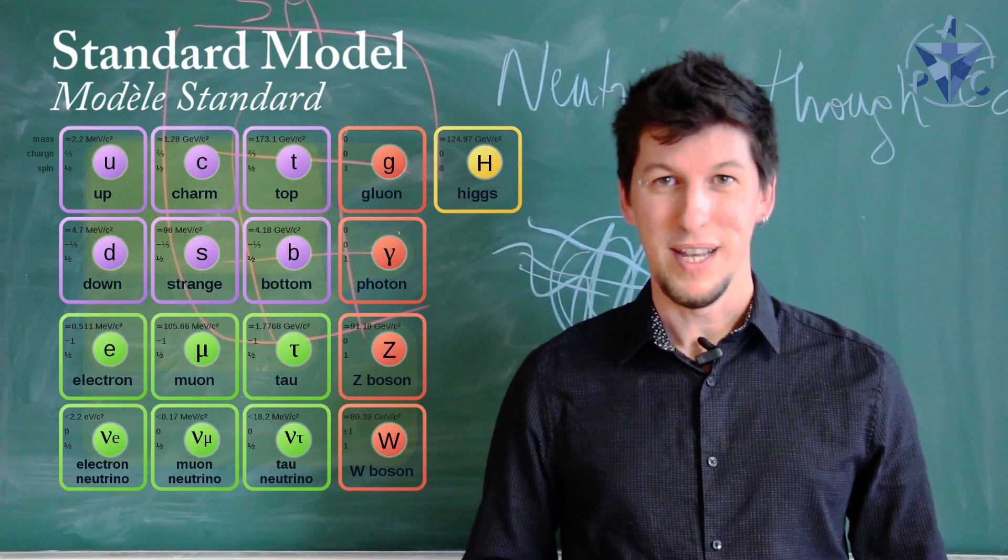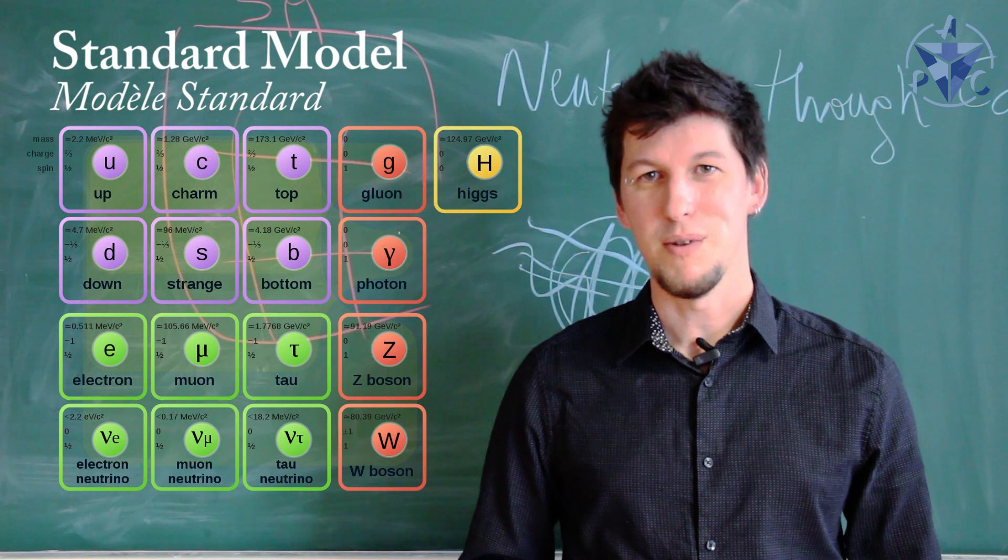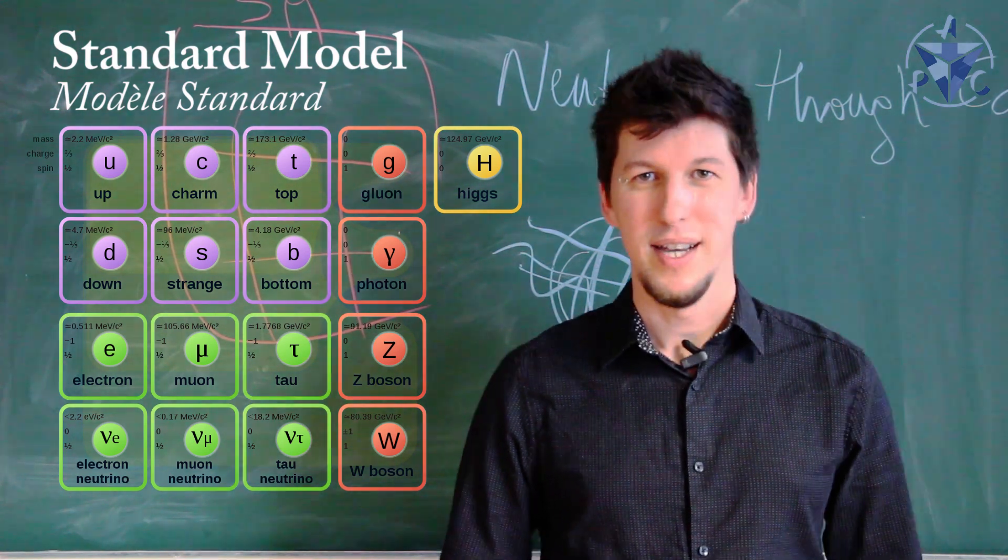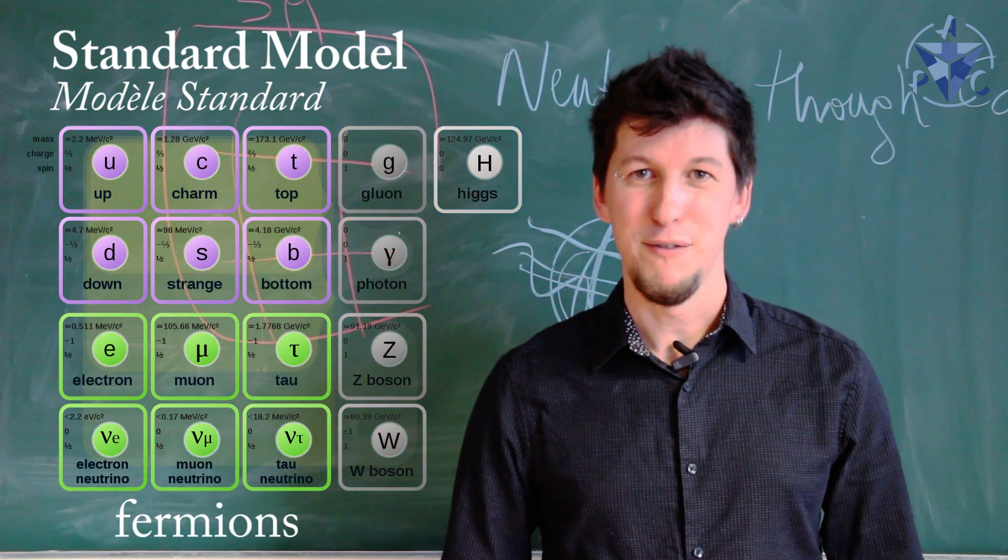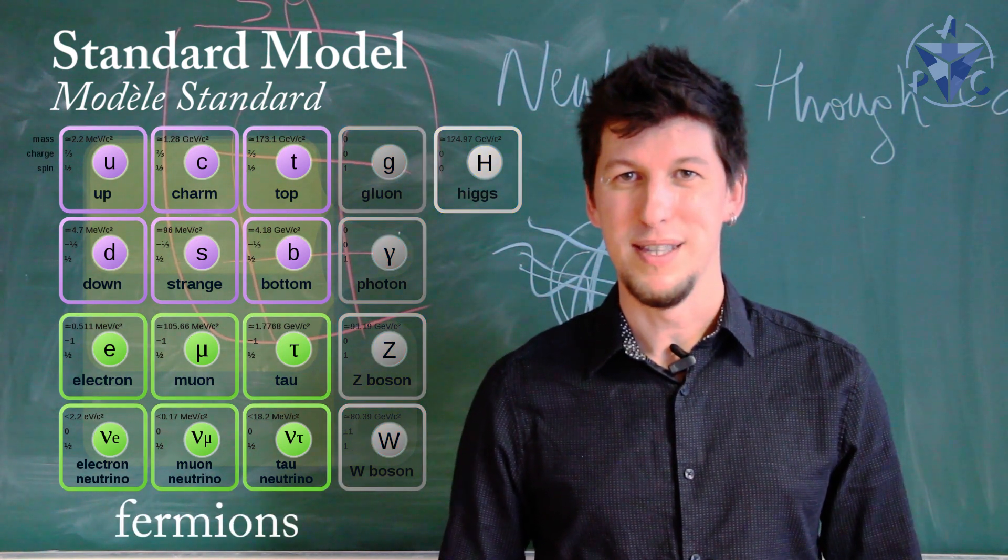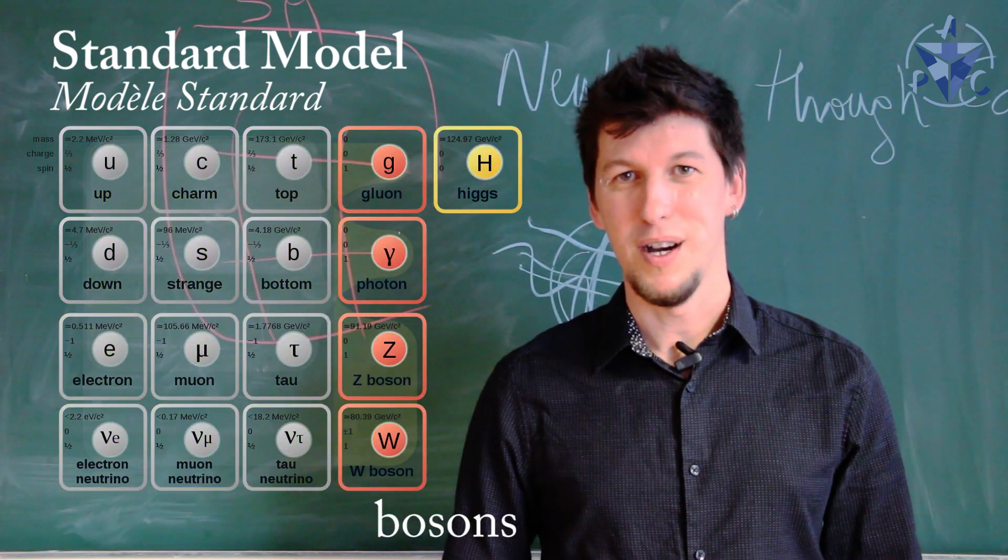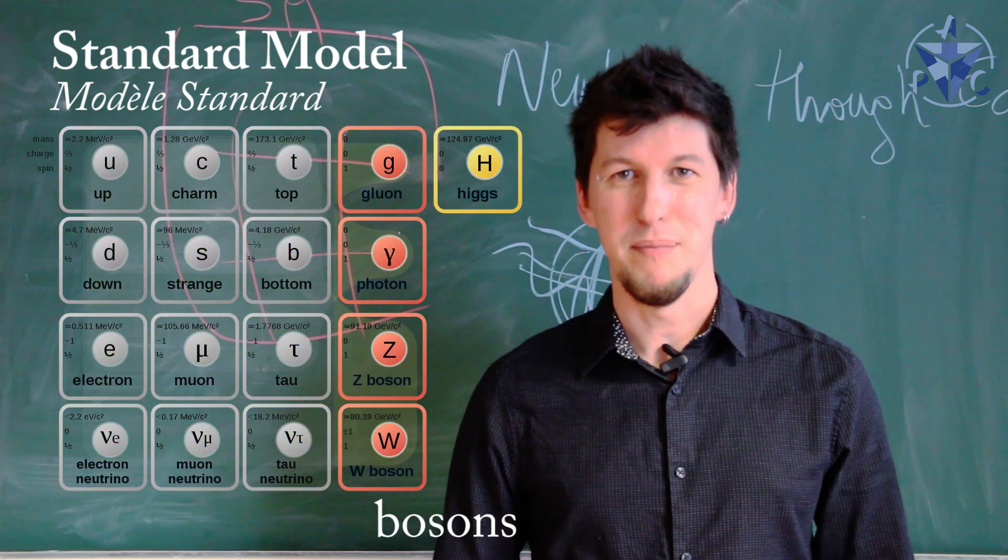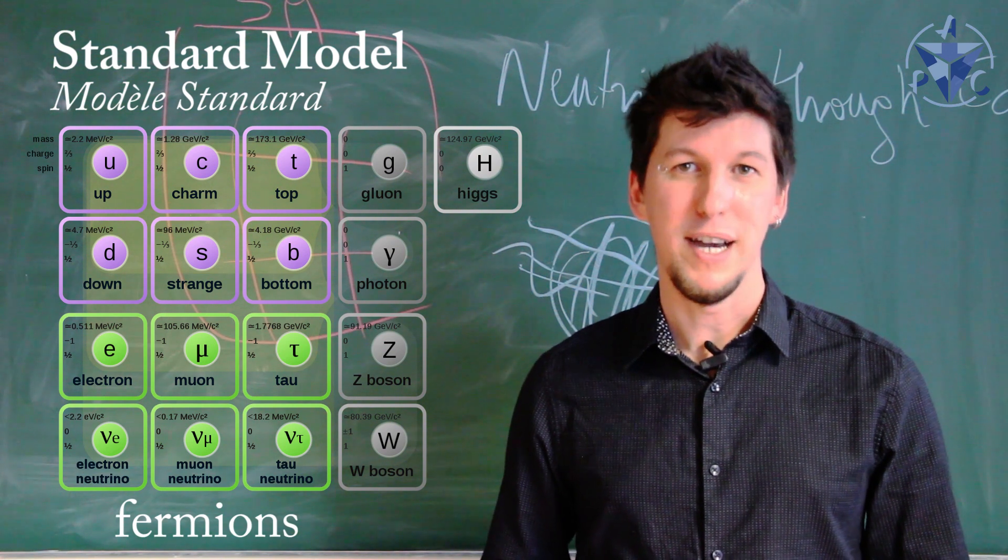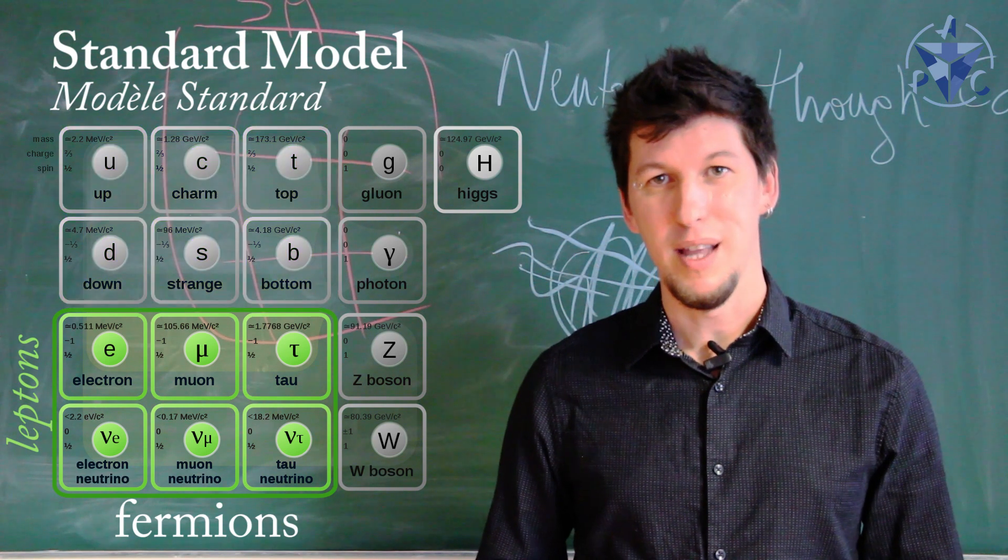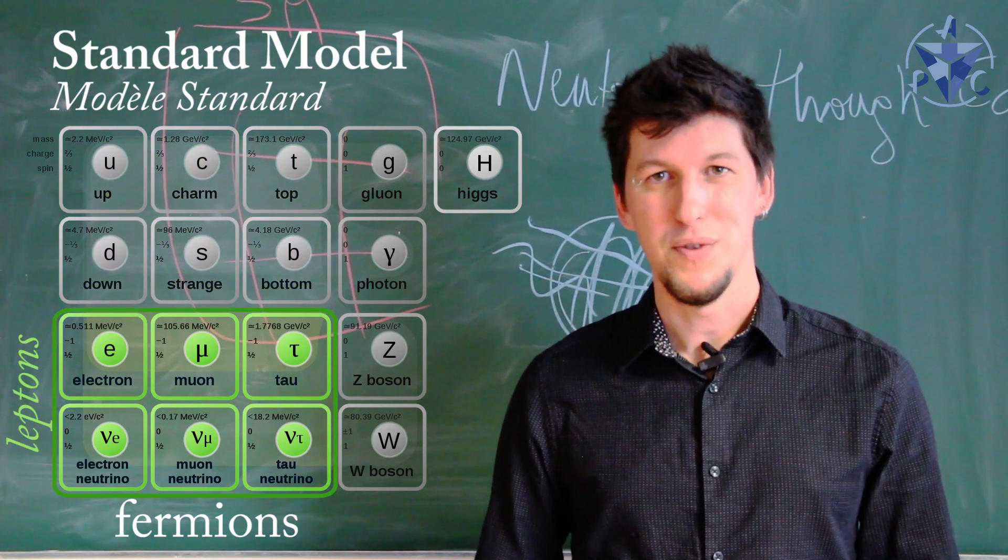Neutrinos are part of the standard model, which is the theory that describes all elementary particles that we know today and how they interact. In the standard model, the fermions are what you would think of as the matter or the stuff all around us, while the bosons are responsible for the interaction between them. The fermions are divided into quarks and leptons. The electrons that you know are leptons and so are the neutrinos.